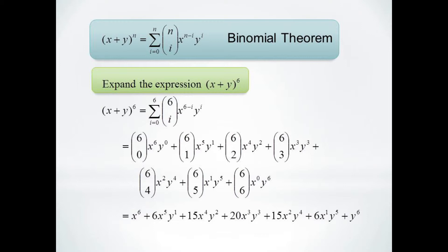Now we just need to evaluate each coefficient using our formula n factorial over n minus r factorial r factorial. This is not quite as painful as it sounds. We know the coefficients are symmetric, so we really only need to evaluate half of them.